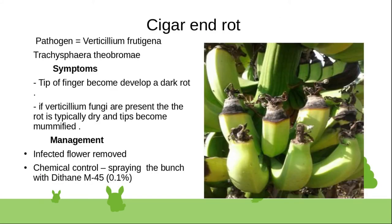Cigar end rot is caused by Verticillium theobromae and Trichosporon theobromae. Symptoms include the tip of the finger becoming darkened and mummified. If Verticillium fungi are present, the rot is typically dry and the tip becomes mummified. Management includes removing infected flowers and spraying with Dithane M-45 at 0.1 percent.